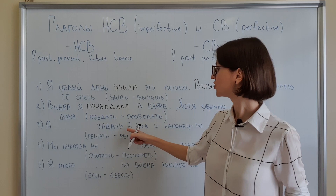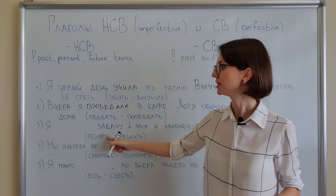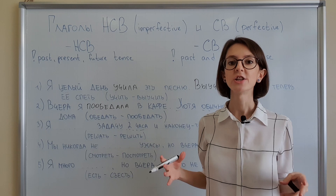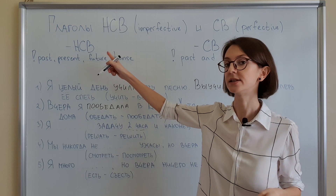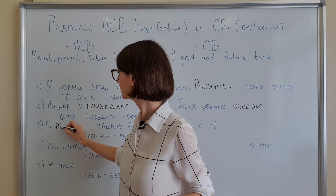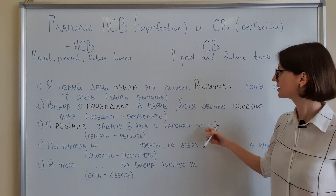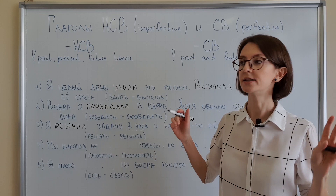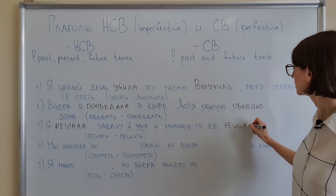Next: Я [verb] задачу два часа и наконец-то её [verb]. Решать means 'to solve.' We have the time indicator два часа — two hours — I was doing something for two hours, so this is definitely NSV: я решала. And finally the action is done — наконец-то её решила (SV). Full sentence: Я решала задачу два часа и наконец-то её решила.